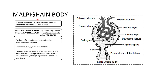The Malpighian body is made up of a double-walled cup-shaped structure opening in the cortex, about 1.2 mm in width. The outer wall is known as the parietal layer, formed of squamous epithelium. The inner wall is known as the visceral layer, formed of special cells called podocytes. These podocytes rest on feet-like projections called pedicels. The foot processes are in intimate contact with the pores of the endothelium of the blood capillaries through a basement membrane.